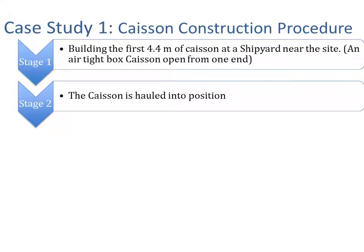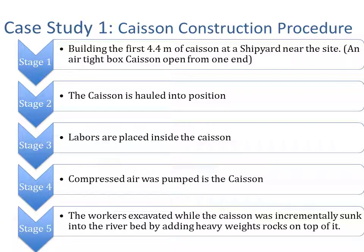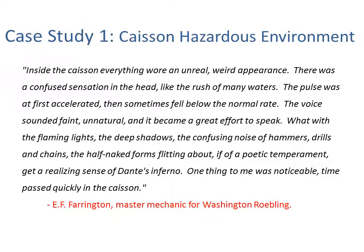Construction began by building the first 4.4 meters of caisson at the shipyard. The caisson was then hauled into position, laborers were placed inside, and compressed air was pumped in. Workers excavated while the caisson was incrementally sunk into the riverbed by adding heavy weights of rocks on top. This was the first case of a pneumatic caisson and the first exposure to what became known as caisson disease, caused by high pressure, with workers suffering from serious medical problems.